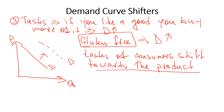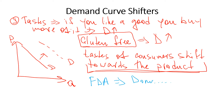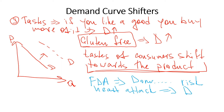For example, if the FDA makes a statement that eating one or two donuts a day will increase the risk of high blood pressure or heart attack, then the taste of the population is going to shift away from donuts — and therefore demand for donuts is going to decrease.